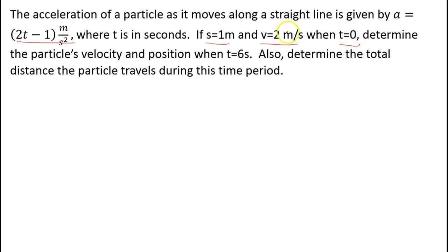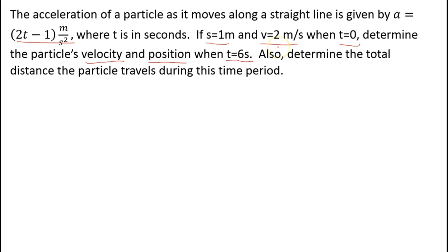So we're starting the clock and we have a displacement and a velocity. Determine the particle's velocity and position when t is 6 seconds — so we want to know what the velocity and position at 6 seconds are. Also, determine the total distance the particle travels during this time period, from the origin to the end of 6 seconds. We also know when we start the clock that the particle is already moving at 2 meters per second.